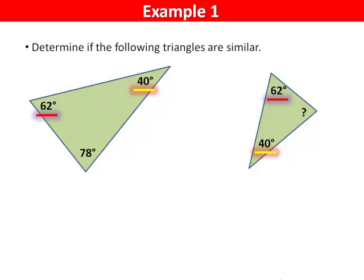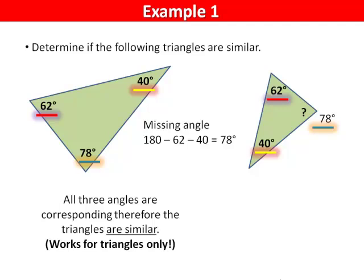We know that all angles in a triangle sum to 180, so to find the missing angle we take 180 minus 62 minus 40, which is 78. The angles correspond, so the triangles are similar.